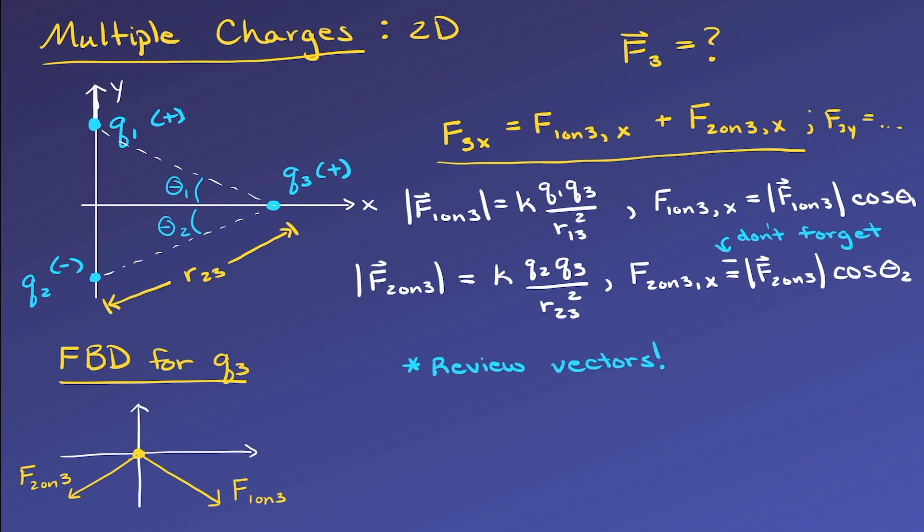For the y components, we would do the same thing, but using sine functions, since the y components are along the opposite sides in the right triangles. And F1 on 3y and F2 on 3y should both be negative in this case, since they are both downward in the minus y direction.